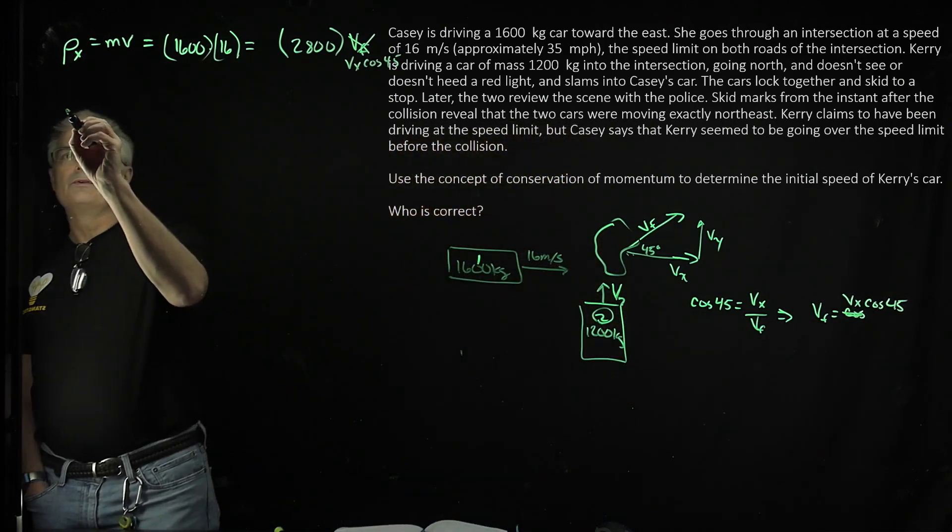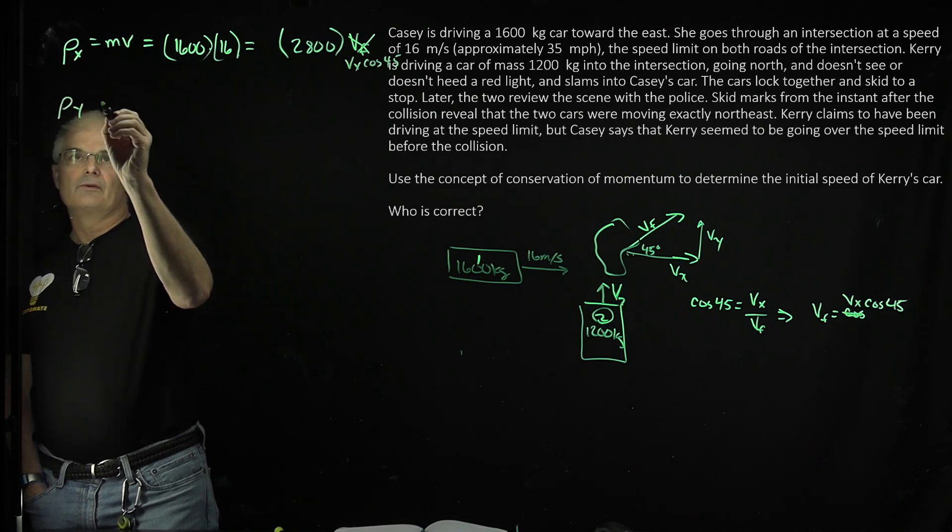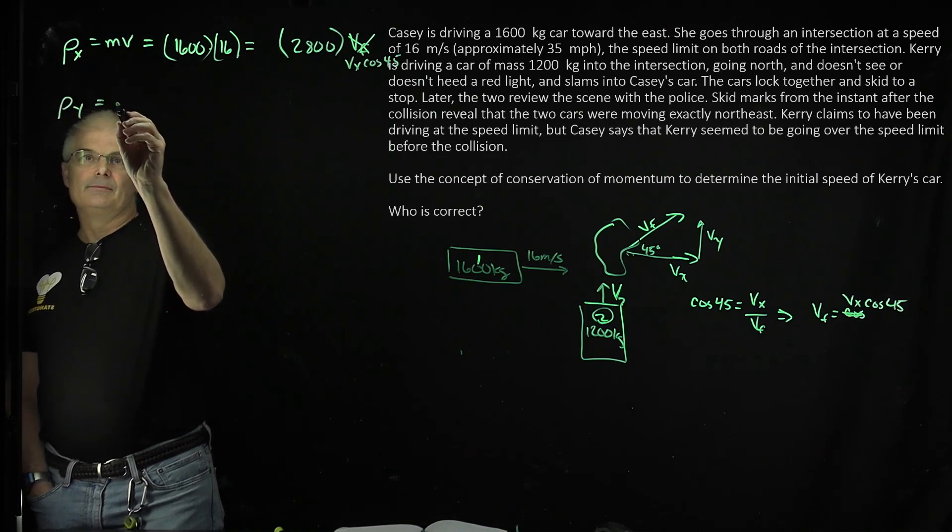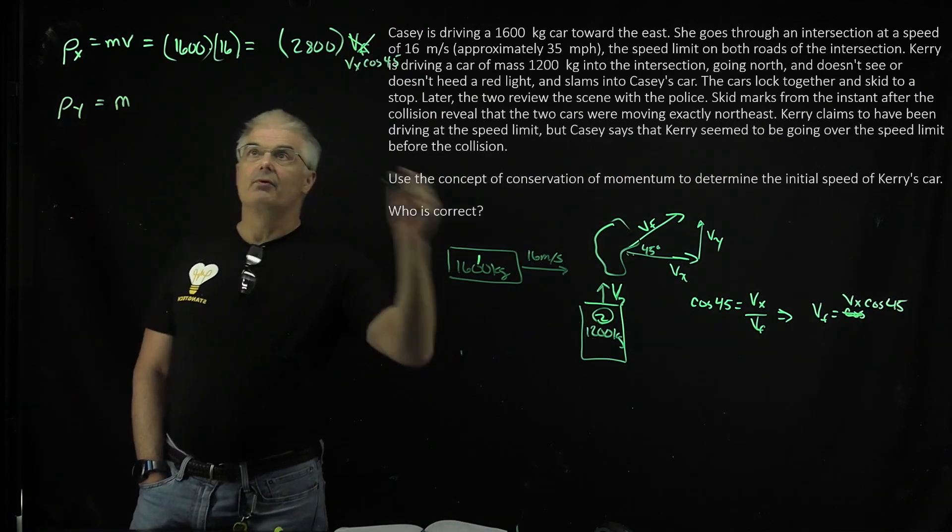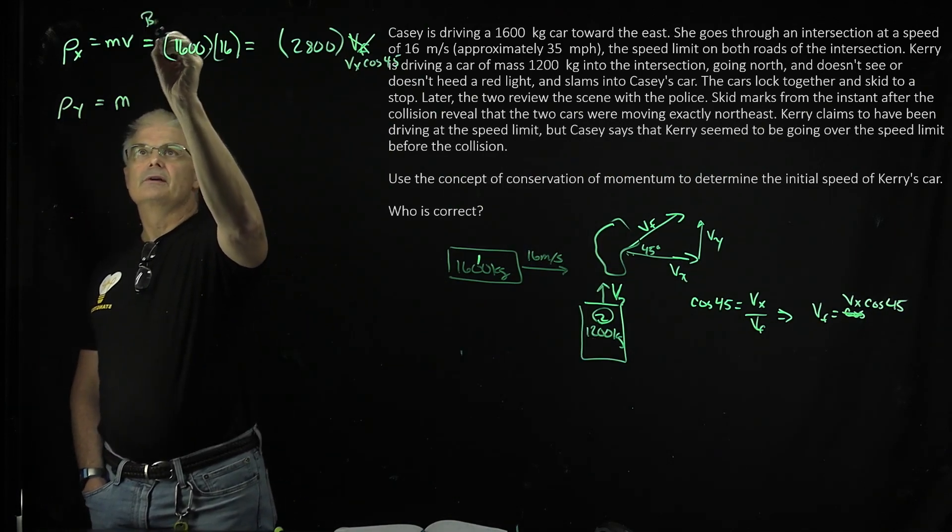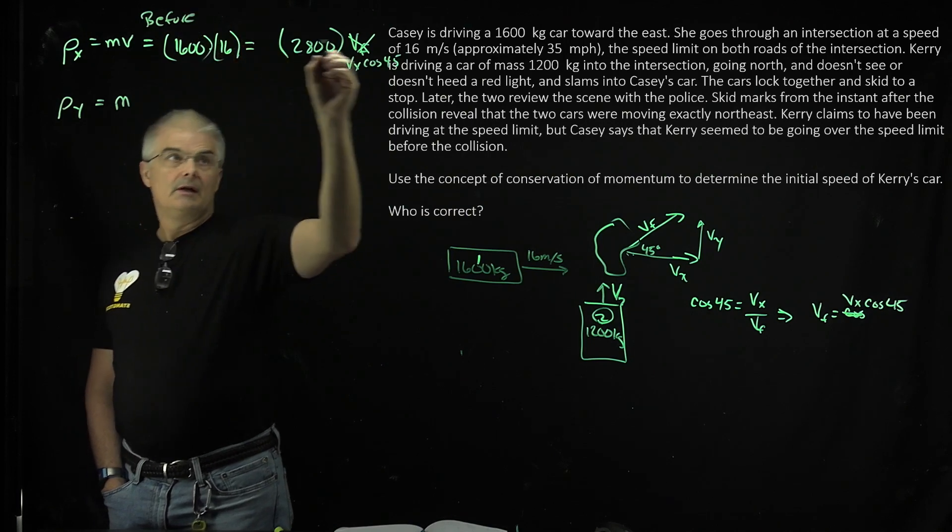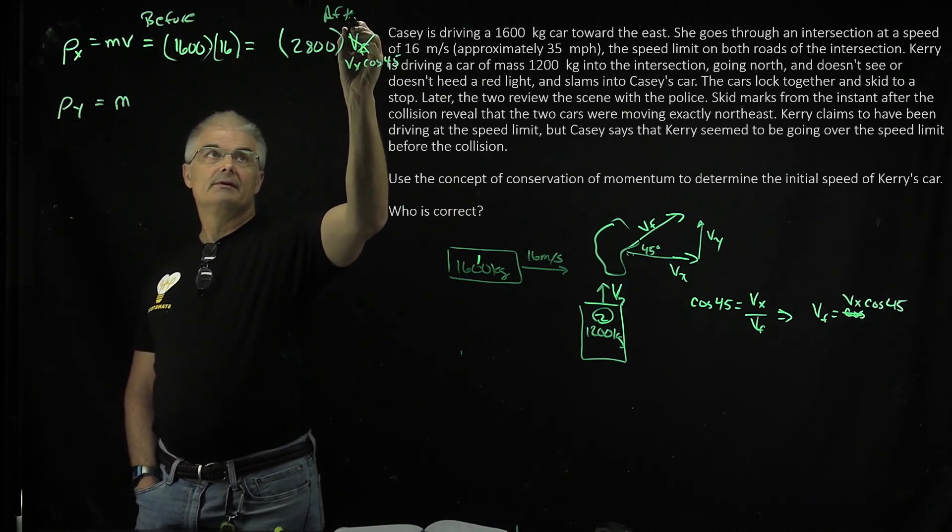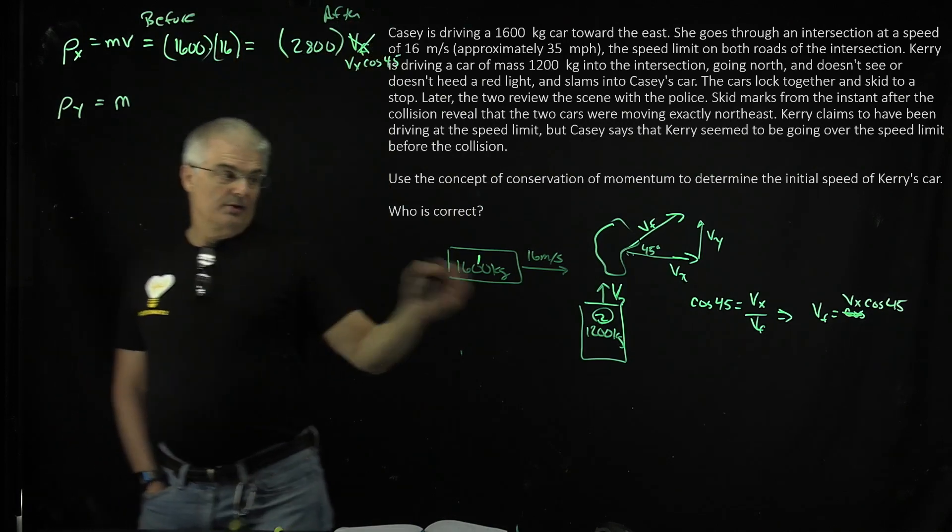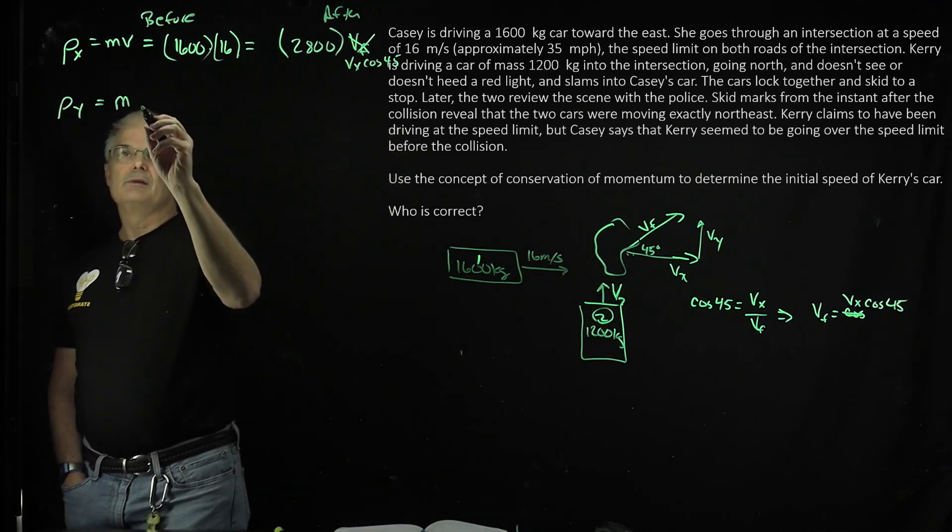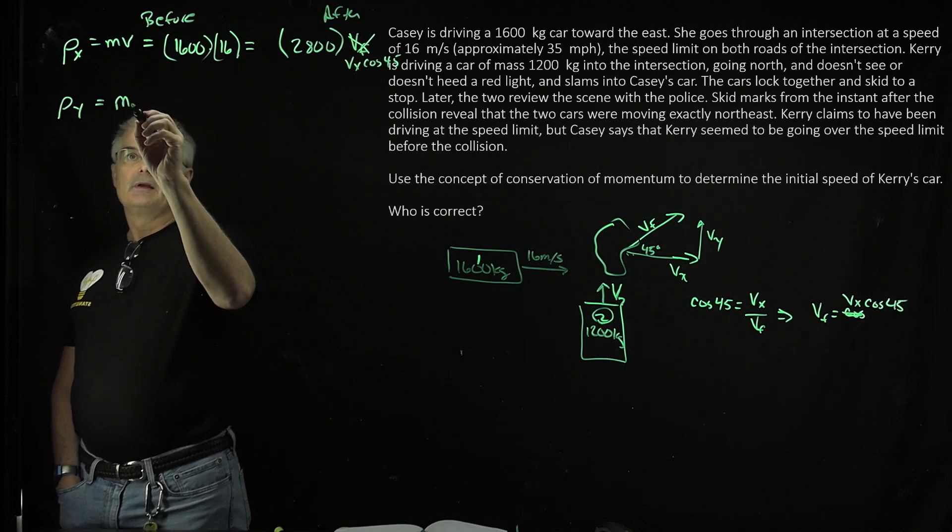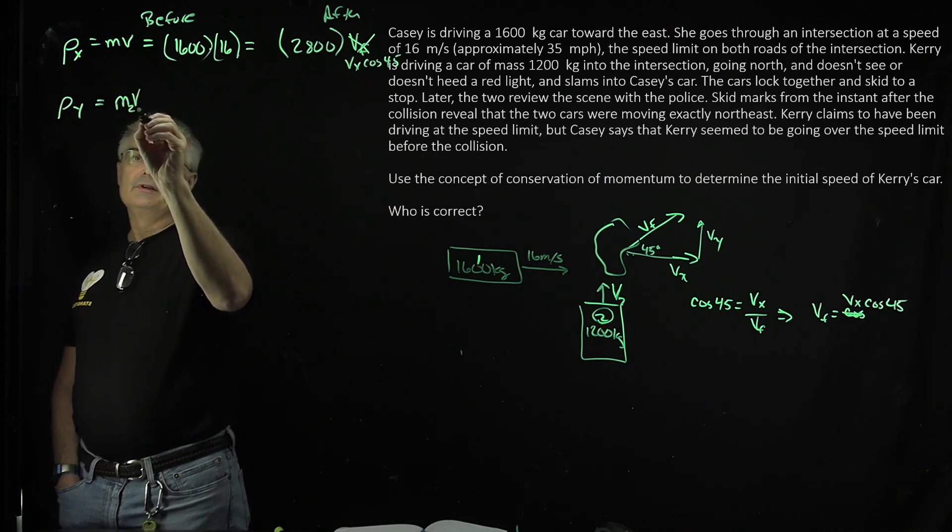Now in the Y direction, the P in the Y direction is going to be M of car two, because the only, this is before, this is the before stage right here. And this is after the collision, right? But there's only, there's no, this car doesn't know why, but this car has the Y. It's going to be M times M, if you call it M car two, M two V two.